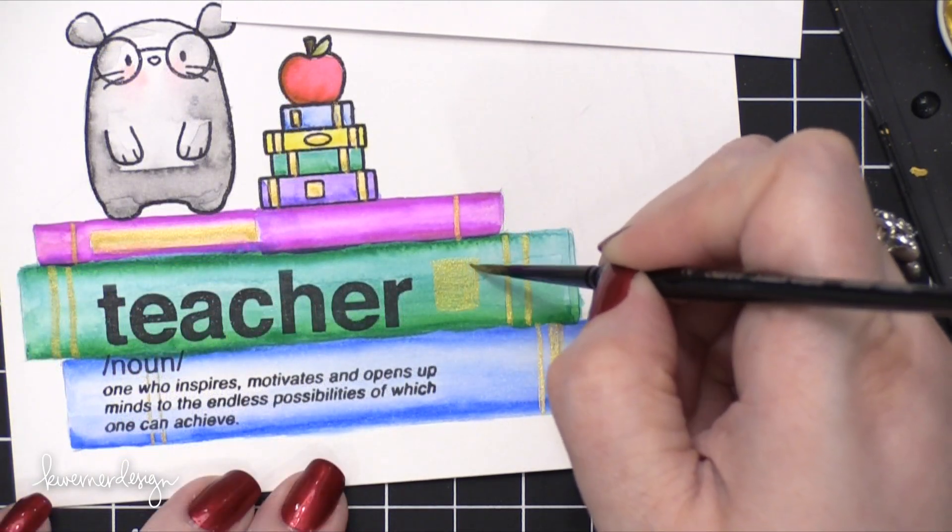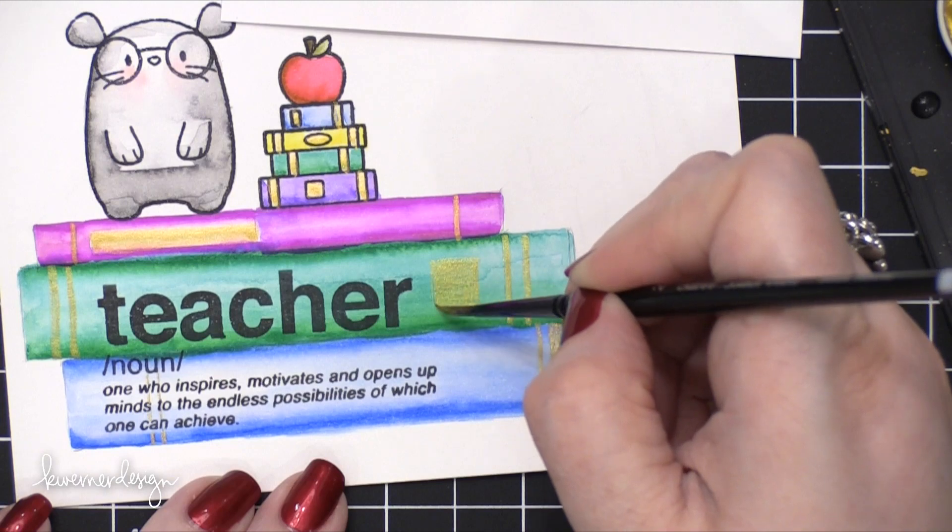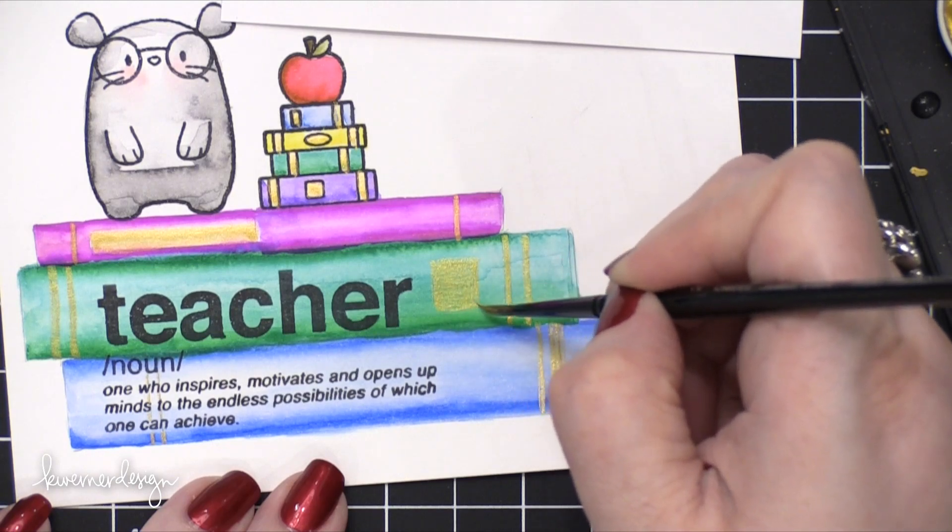And like I said before, this gold paint is very thick and opaque, so it covered up that color without much of a problem.